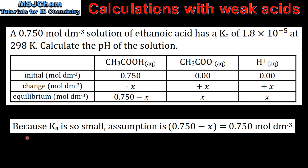To simplify our calculation we're going to make an assumption. Because the value of Ka is so small, the assumption is that 0.750 minus X is equal to 0.750 — that is, the equilibrium concentration of the ethanoic acid is equal to the initial concentration. This is a valid assumption because the value of Ka is so small: 1.8 times 10 to the negative 5.